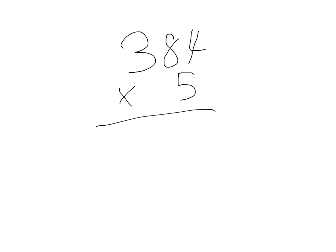So, first we have to ask ourselves, what's 5 times 4, and that is 20. And then we ask, what is 5 times 8, and that is 40. And we add on the 2, so that is 42.